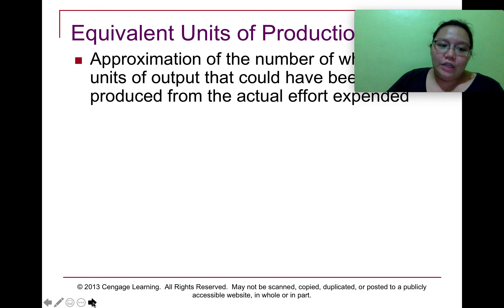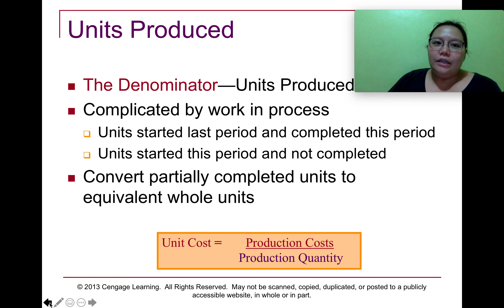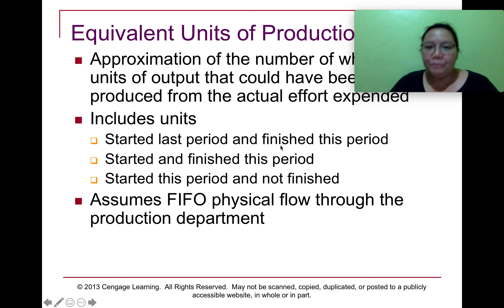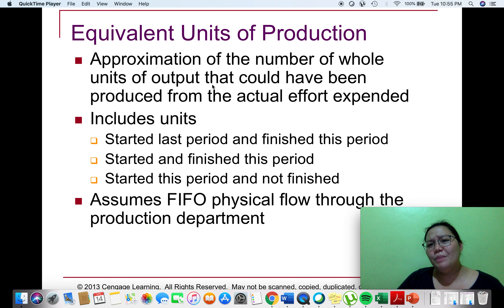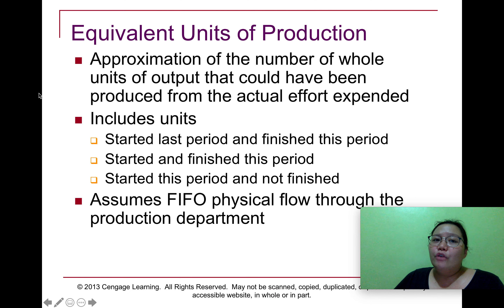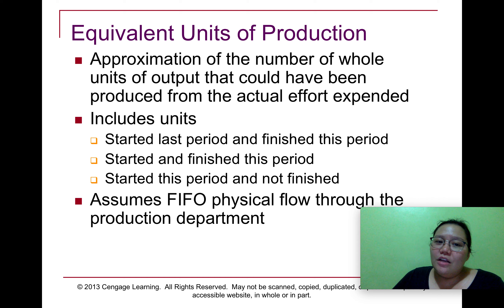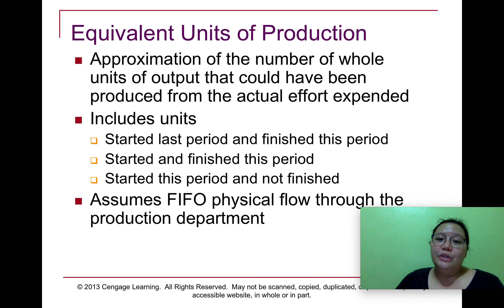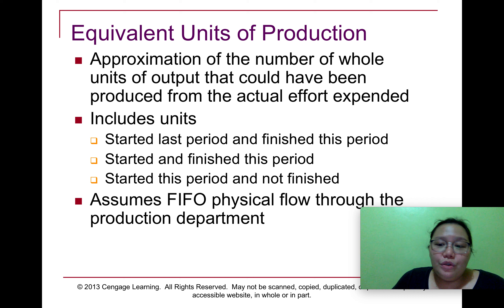The denominator we use is what we call the equivalent units of production, or EUP. EUP is an approximation of the number of whole units of output that could have been produced from the actual effort expended. This includes units started last period and finished this period, units started and finished this period, and units started this period but not finished. We assume a FIFO physical flow through the production department, and we'll discuss the difference between FIFO and weighted average later on.